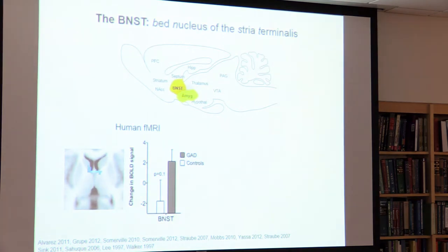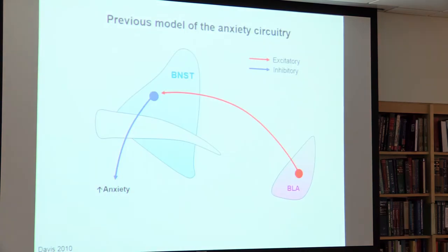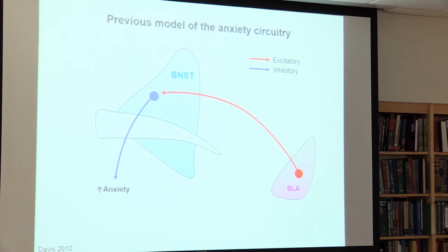Human fMRI studies have shown that BNST activity increases upon threatening stimuli, and this response is exaggerated in patients with anxiety disorders. Intra-BNST injection of CGRP and CRH—neuropeptides involved in stress-related behavior—elicited anxiogenic behavior in mice on the EPM test. Previous literature suggested that BNST activity increases anxiety and that the major source of excitation is the BLA, but these were inferred from lesion studies without direct tests. We had the tools to test this hypothesis.